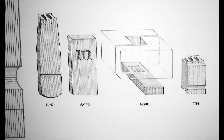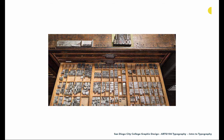Type comes in drawers. Here is what a type drawer looks like, and you can see all of the letter forms fit into different slots. You can also get an idea of how many pieces of type would actually have to be created for a full set of type — it was quite a bit of work.